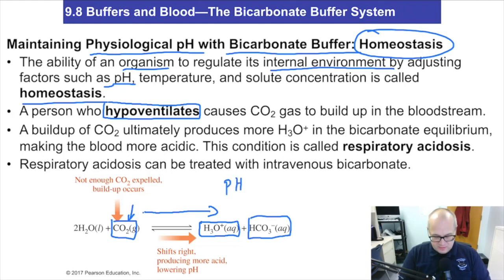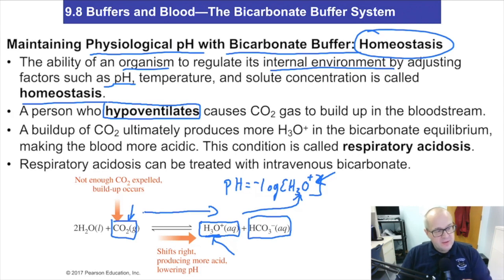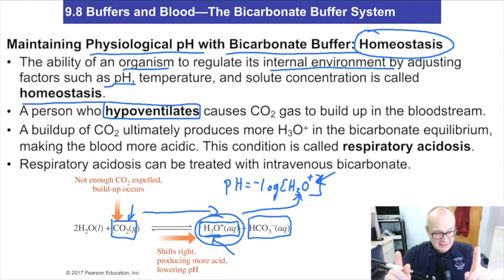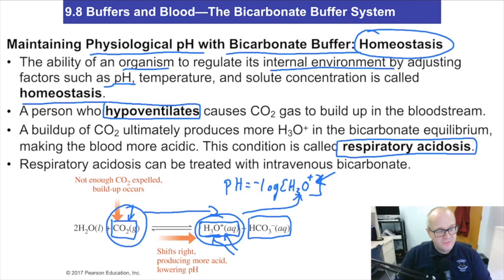Remember, pH is the negative log of the concentration of hydronium. So hydronium is increasing in concentration, which means the hydronium concentration is getting bigger, so the pH is getting more acidic. Your blood is becoming more acidic because the hydronium concentration is going up, so the pH is going down — less than seven. This is called respiratory acidosis, because your blood is becoming more acidic because you're building up the concentration of CO₂ by not breathing it out efficiently enough. It forces equilibrium to go to products where the hydronium is — that concentration goes up, pH goes down. That's acidosis.